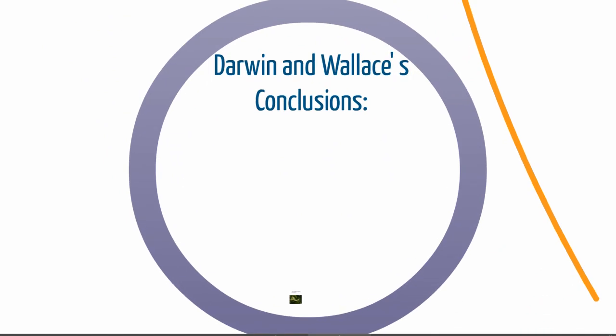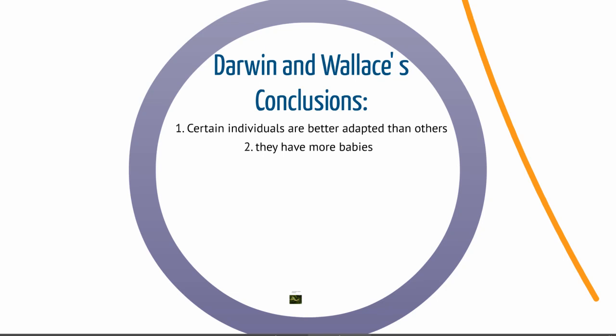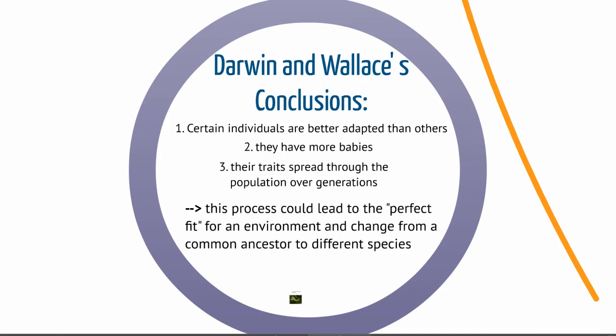Based on those observations, Darwin and Wallace came up with the following conclusions: certain individuals are better adapted than others; those individuals have more babies and therefore their traits spread through the population over generations; and this process could lead to organisms having a perfect fit for their environment and change a common ancestor into different species based on different environmental factors. These are the basics of the theory of evolution by natural selection.